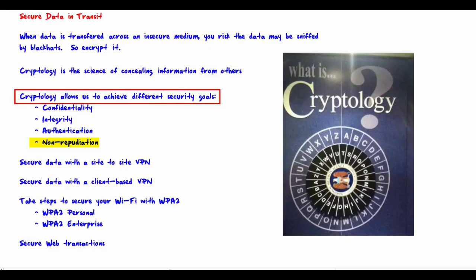Non-repudiation is probably the least intuitive of these, so here is an example. Suppose a person sends an email to buy a stock, and then an hour later that stock tanks. That person might say they never sent an email to buy it. Non-repudiation means it can be proved that they actually did send that order to buy that stock.